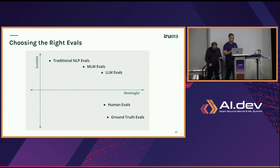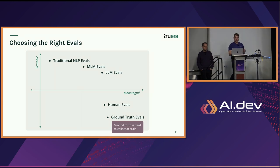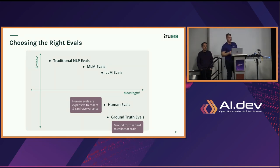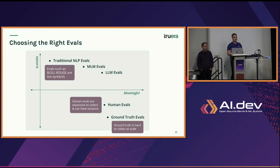As you start to think about the sorts of evals you might want — from prototyping your first LLM application all the way up to production — a lot of teams start with ground truth evals: the core set of questions and answers you really want your application to get right. But these don't really scale; it's hard to extend them to all the different ways your LLM application will be used. As you get your application in the hands of users, you can start collecting human evals — thumbs up, thumbs down. But again, it doesn't scale because a pretty small percentage of users will actually click that, leaving you with a lot of variance.